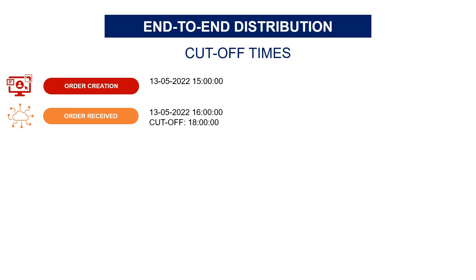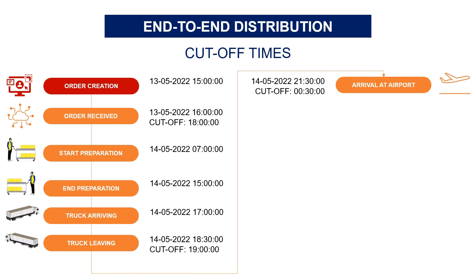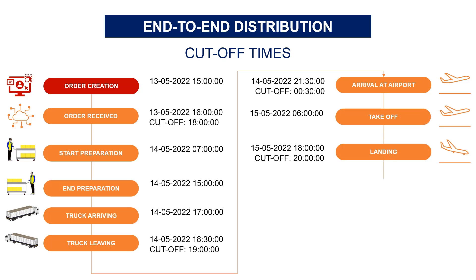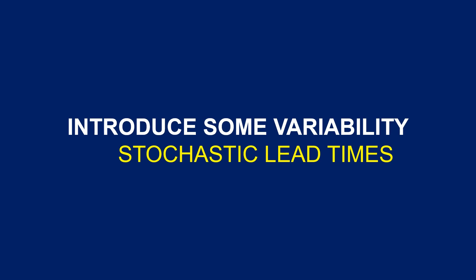Let's first draw the perfect scenario. The distribution planner creates replenishment orders at 3 PM; they are transmitted to the warehouse where the order is prepared, packed, and shipped. The first cutoff time is 7 PM — if your shipment is not ready, you miss the truck and wait 24 hours. Then the truck heads to the airport, arriving two hours later. Second cutoff time: if you can't arrive before the cutoff, you miss the flight and wait 24 hours. The plane takes off, and with the perfect scenario you clear the third cutoff. The day after, clearance starts at 9 AM and the truck ships to the store, giving an end-to-end lead time of 72 hours.